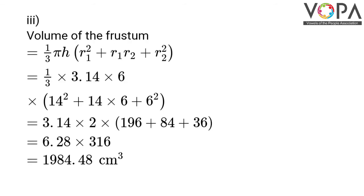Let us now find volume of the frustum, which equals one-third πh(R1 squared plus R1·R2 plus R2 squared). That is one-third into 3.14 into 6, multiplied by (14 squared plus 14 into 6 plus 6 squared). Simplifying, we have 3.14 into 2 multiplied by (196 plus 84 plus 36), which equals 6.28 into 316, giving you 1984.48 cm cubed. That is the volume of the frustum.